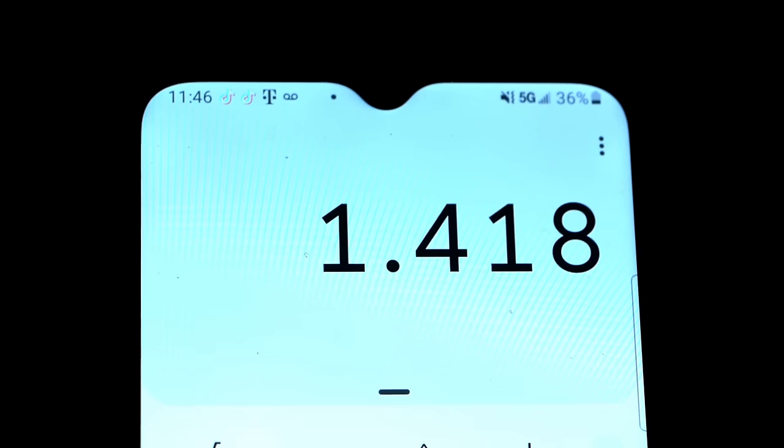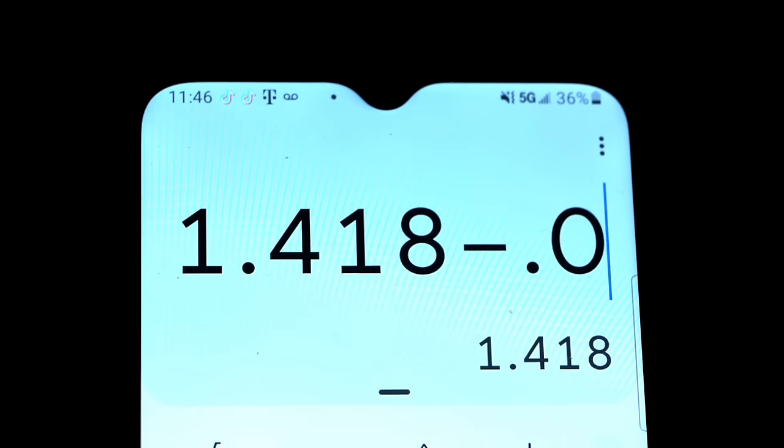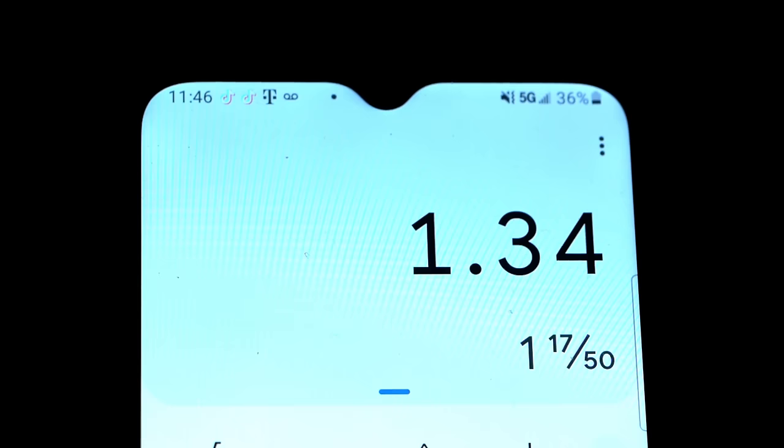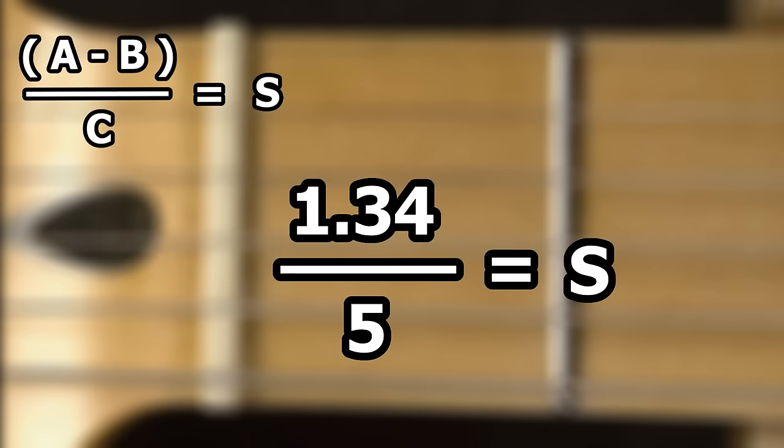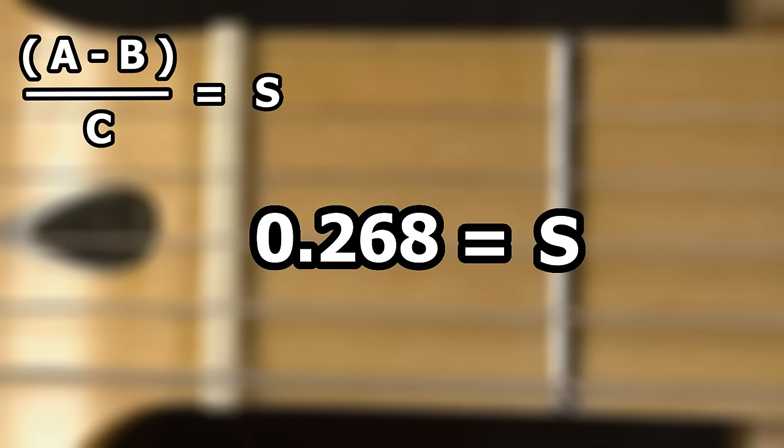Then plug all of those numbers into the A minus B divided by C equals S formula. Working the formula out on a calculator, we take 1.418 and subtract 0.78, which gets us 1.34. Then we divide that by 5 and get 0.268 inches. This is S, which is the width of the spaces between the strings needed for perfectly equal string spacing.